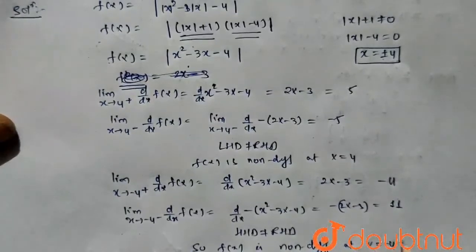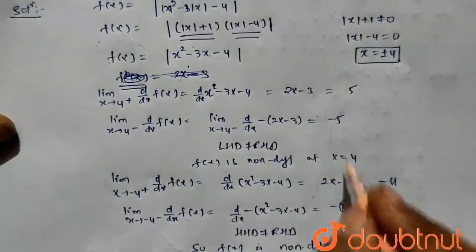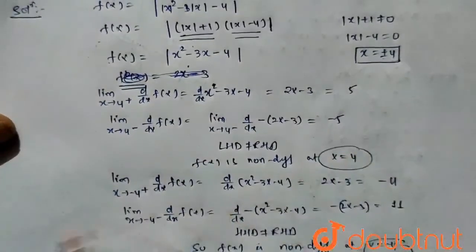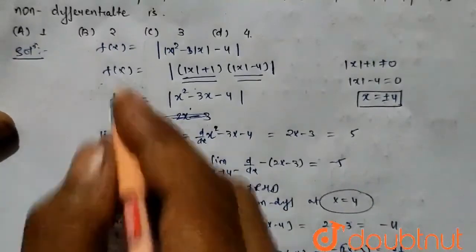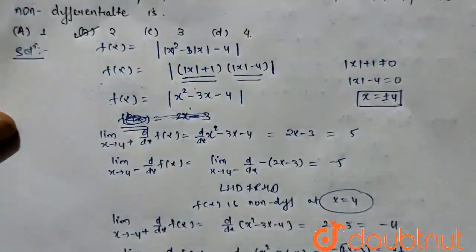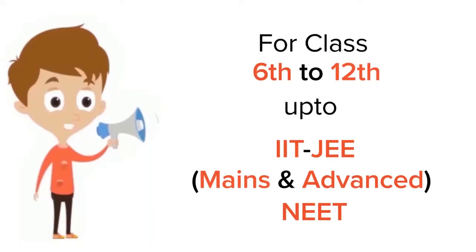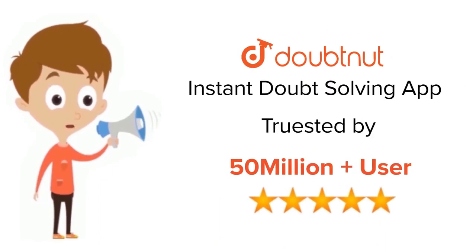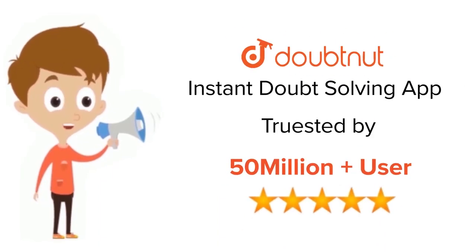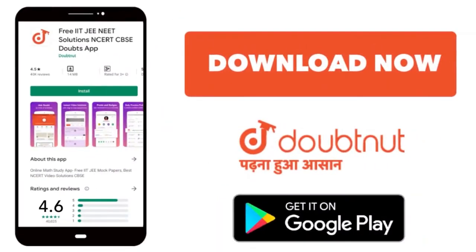So there are two points where the function is non-differentiable. Hence option B is correct. For class 6 to 12th, IIT JEE and NEET level, trusted by more than 5 crore students. Download the Doubtnut app today.